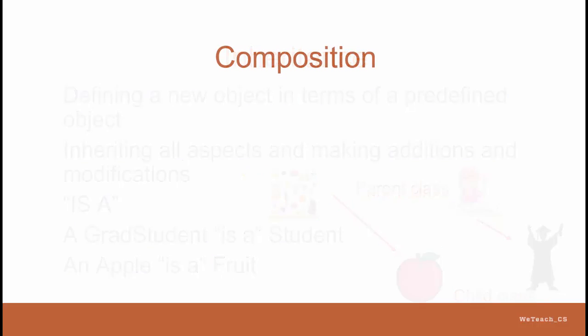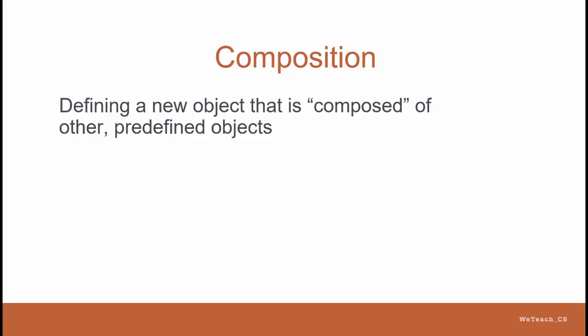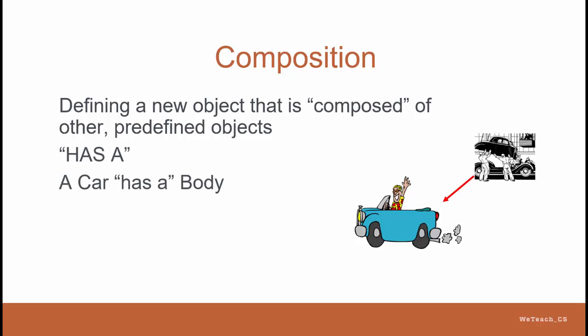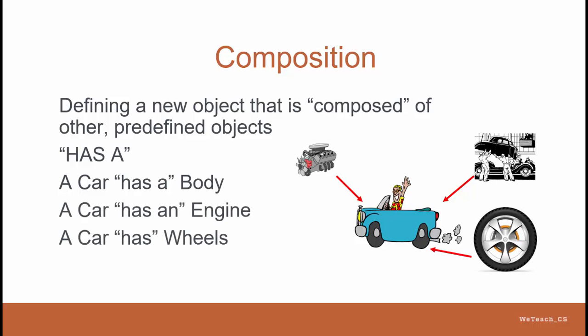Composition refers to the idea that an object is defined with certain components that have been previously defined, and is composed of these objects. For example, a car object would be composed of many parts, such as an engine, a body, and wheels. The test that helps determine composition is the phrase has-a, where you can say that a car has a body, and a car has an engine, and so forth.